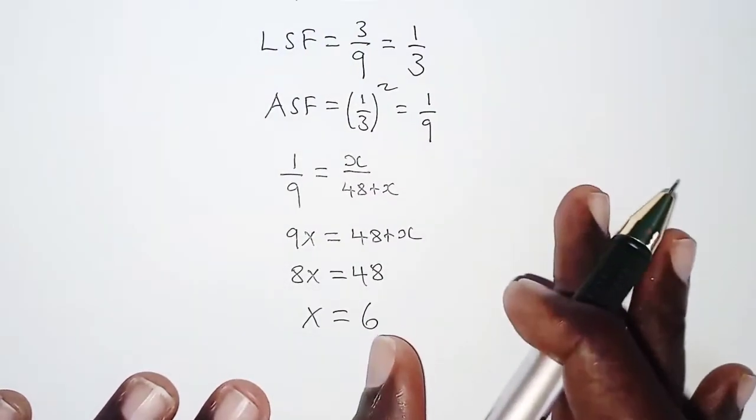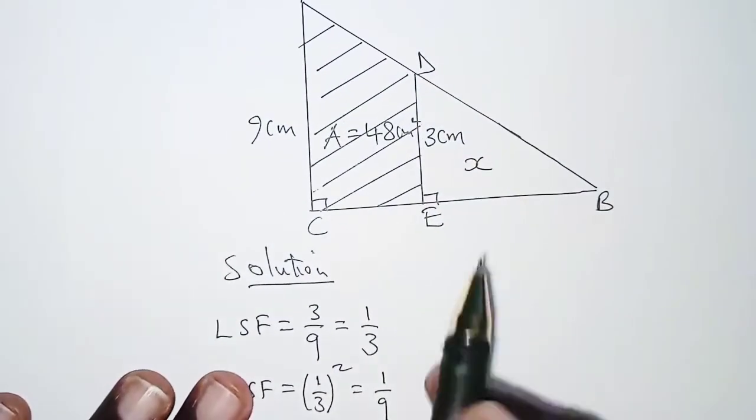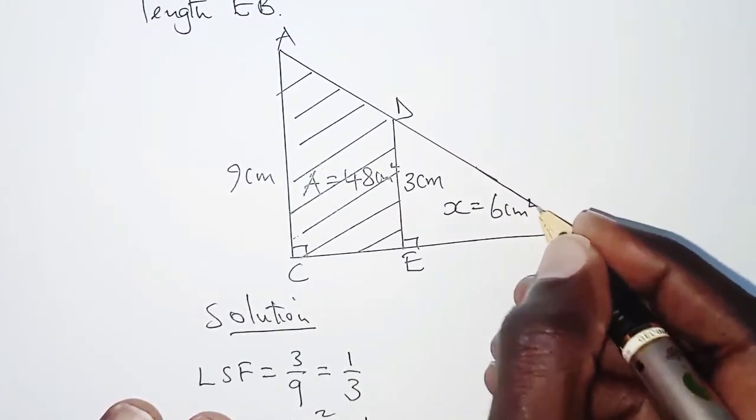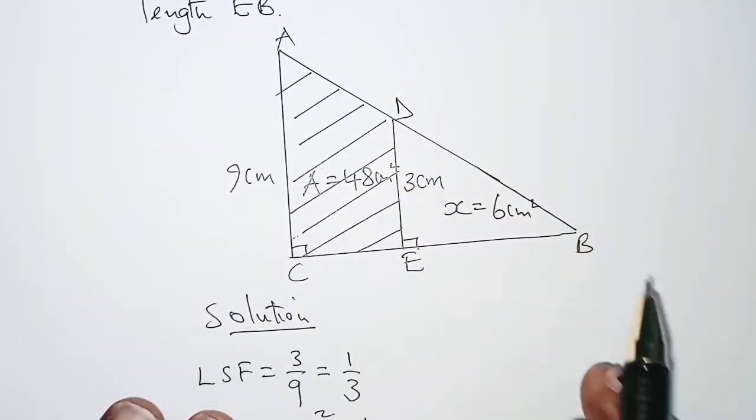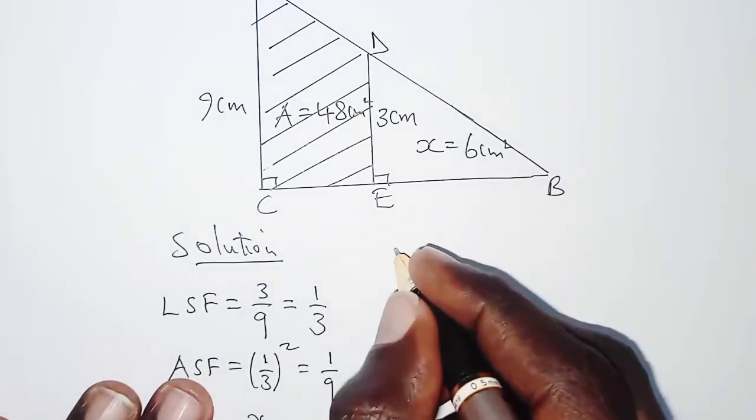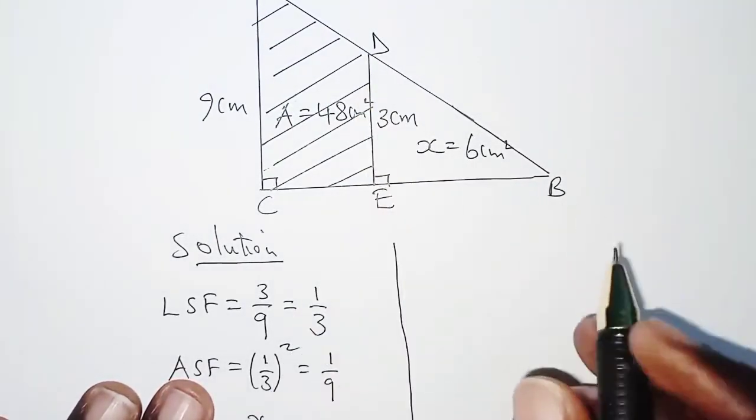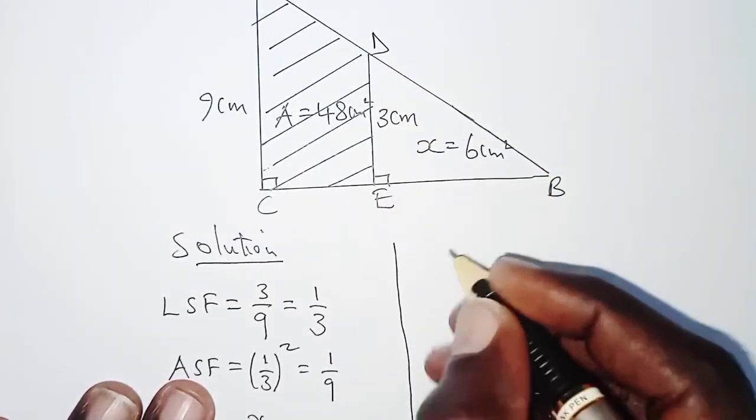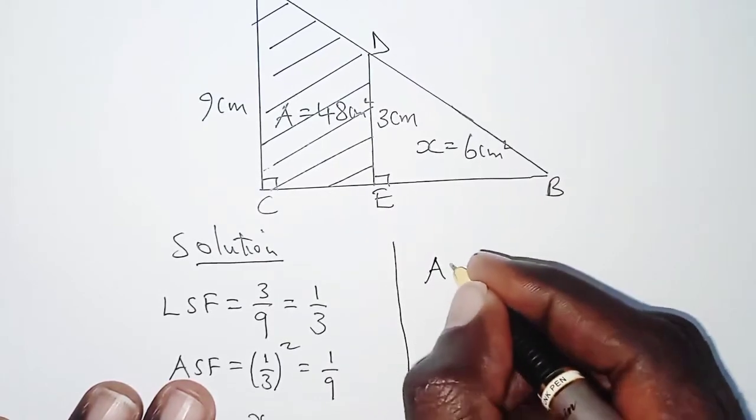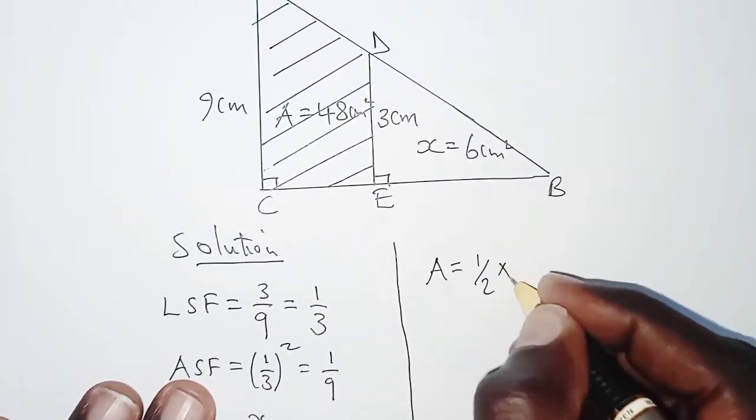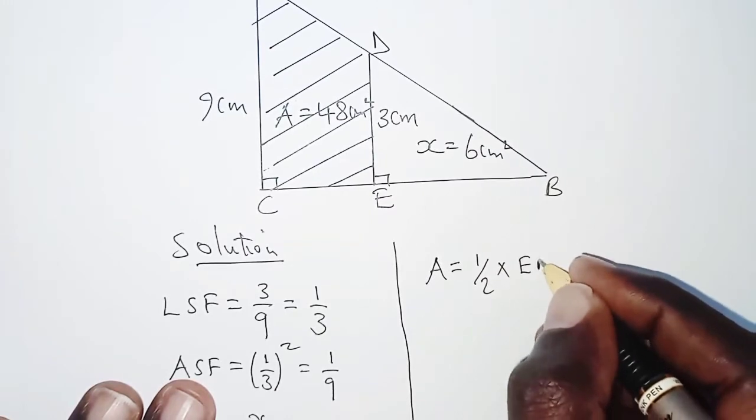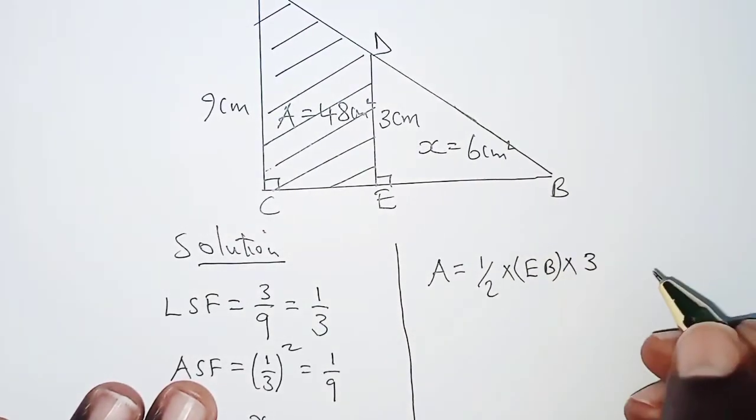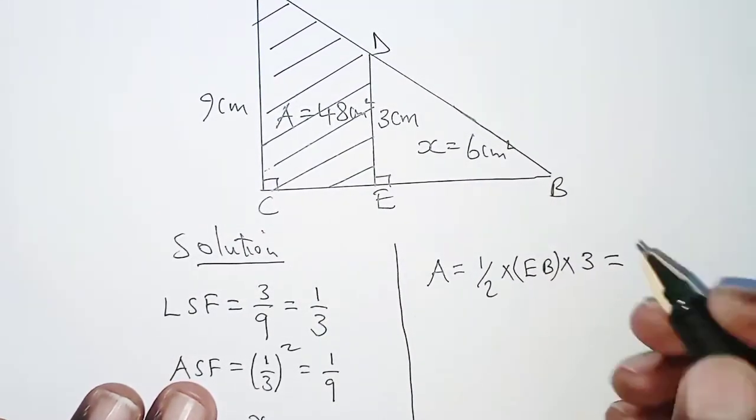Now remember we were to get x so that x will help us determine the value of EB. x here is 6 square centimeters, that is the area of the unshaded part. Given that we now know the area of the unshaded part, and because the triangles are right-angled triangles, we can say area is given as a half times the base, which is EB, times the height, and the height is already given as 3. Remember this should be equated to the area of the triangle which is 6.